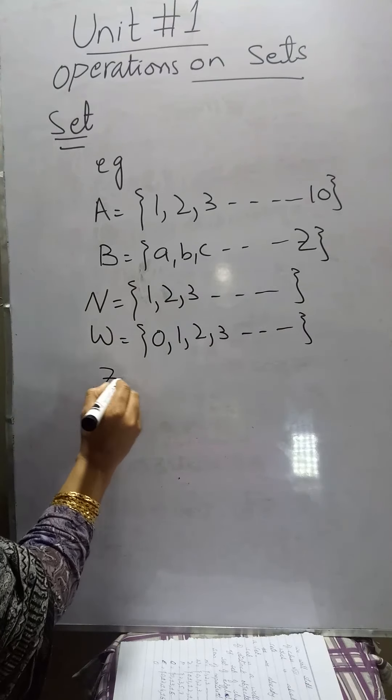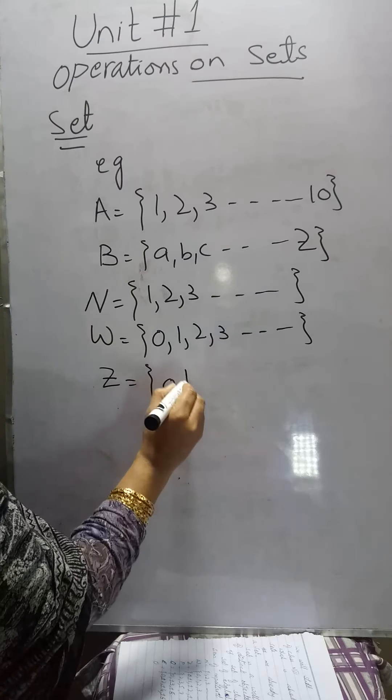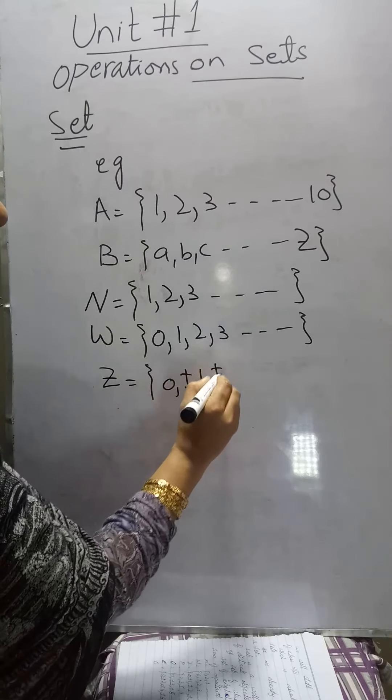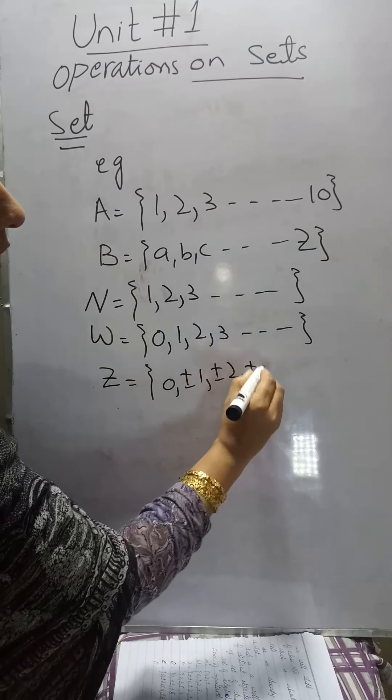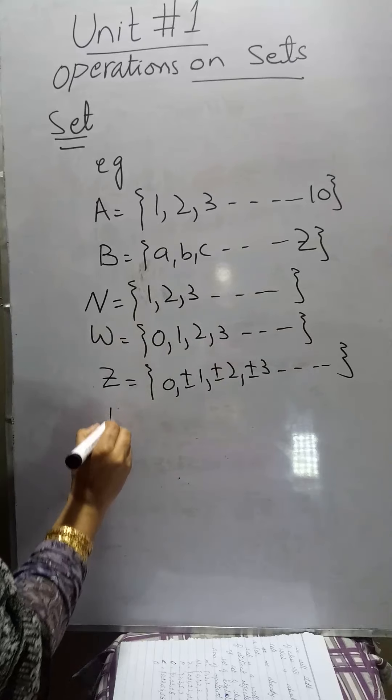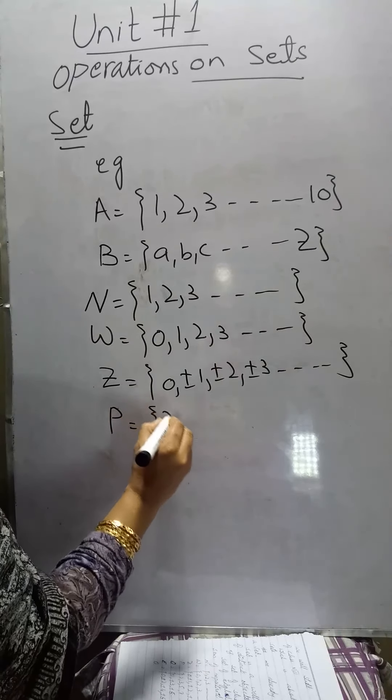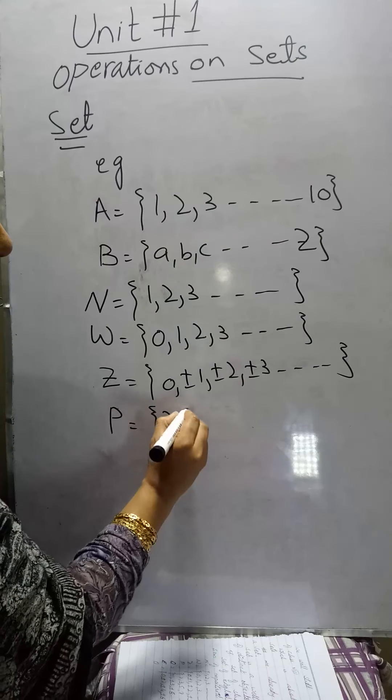The set of integers, represented by the letter Z, and is zero, plus minus one, plus minus two, plus minus three. It is also an infinite set.